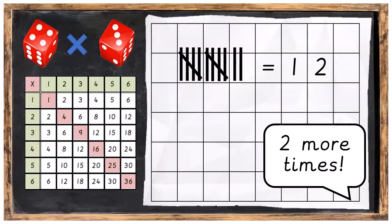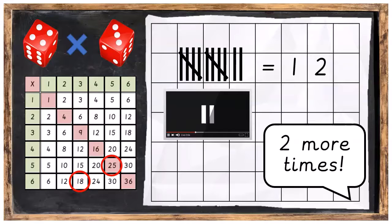By the way, if you don't have any dice, try making the numbers 18 and 25. Press pause and get that done and when you're finished, press play again.